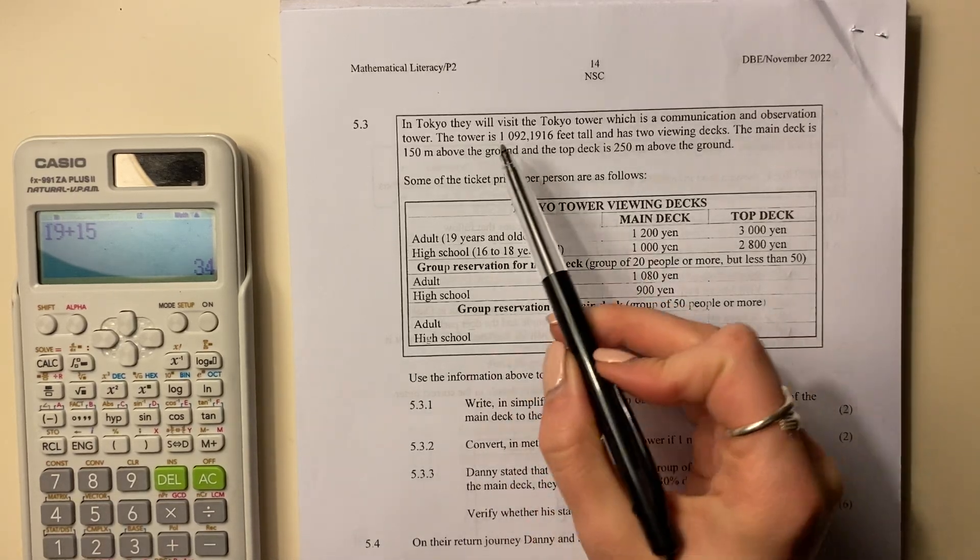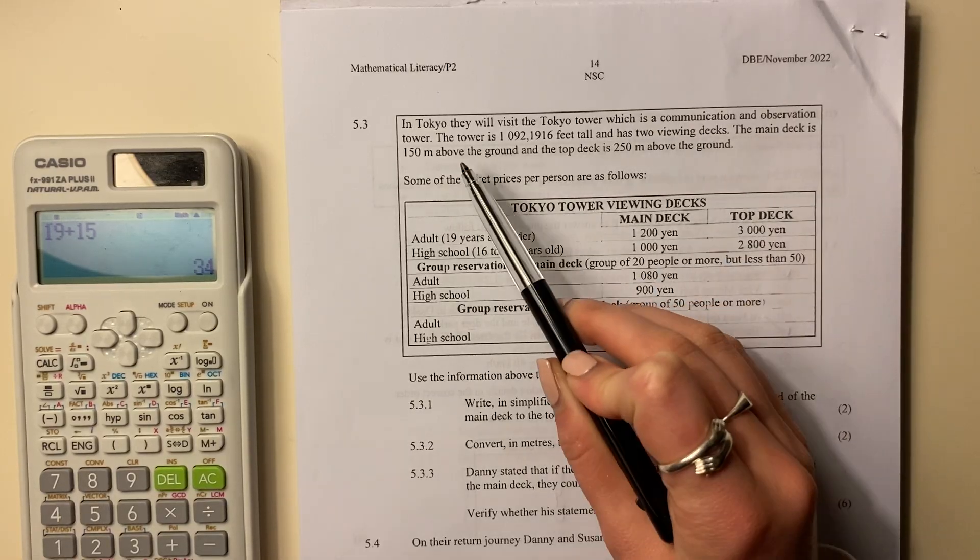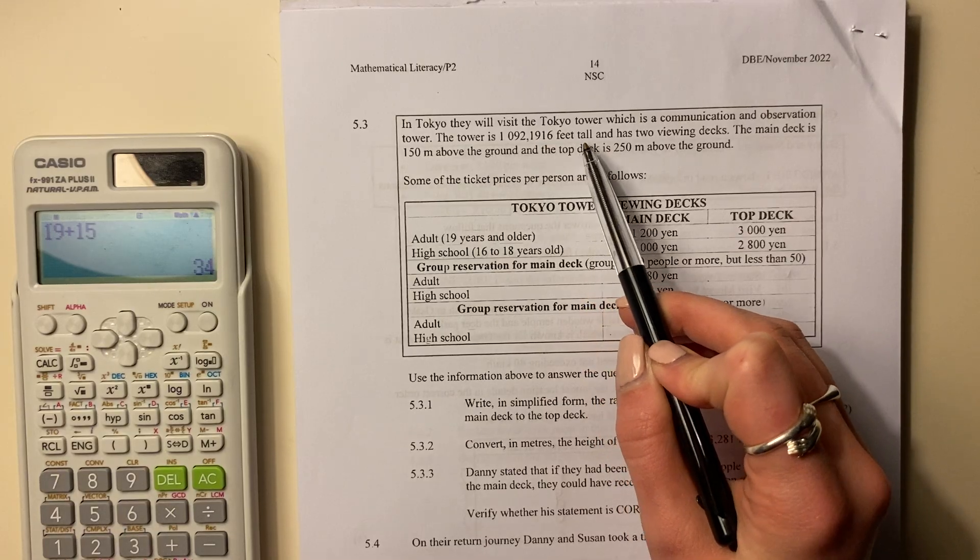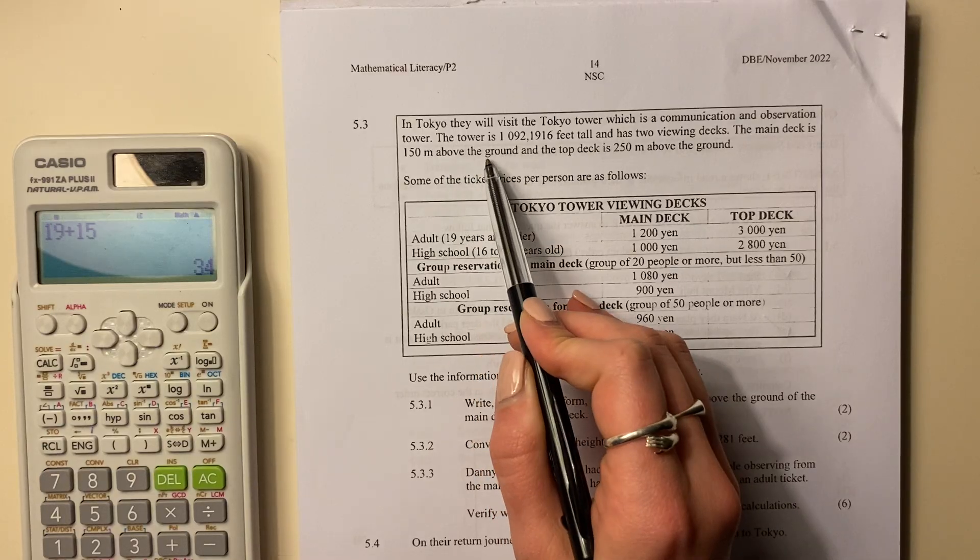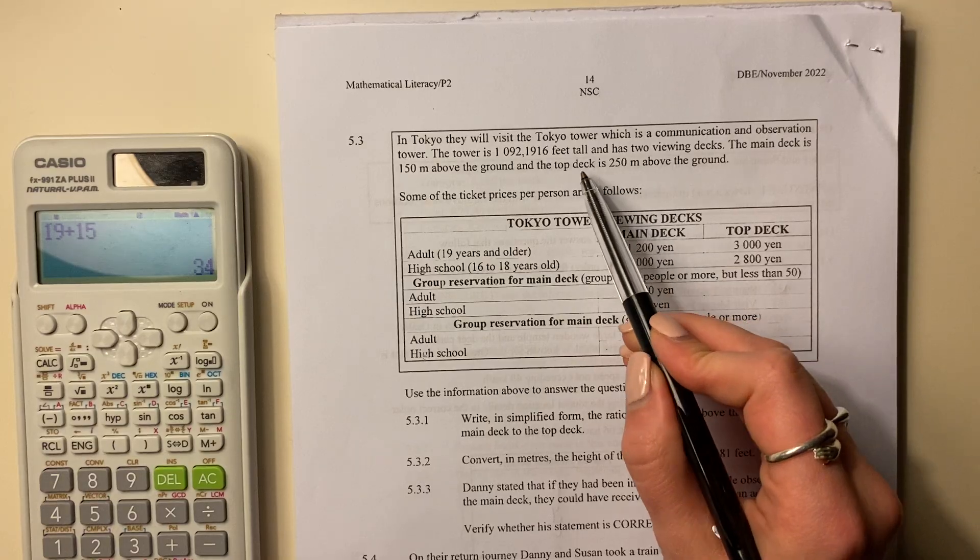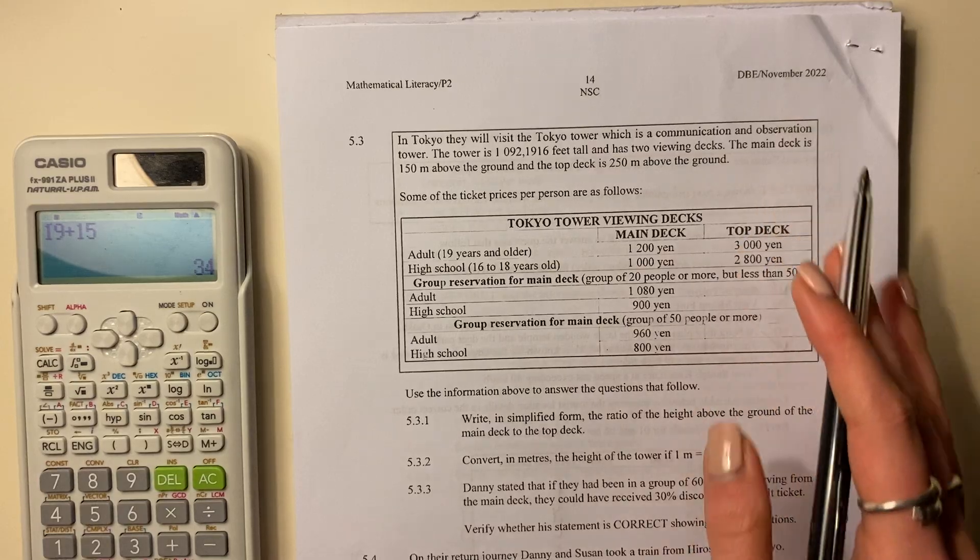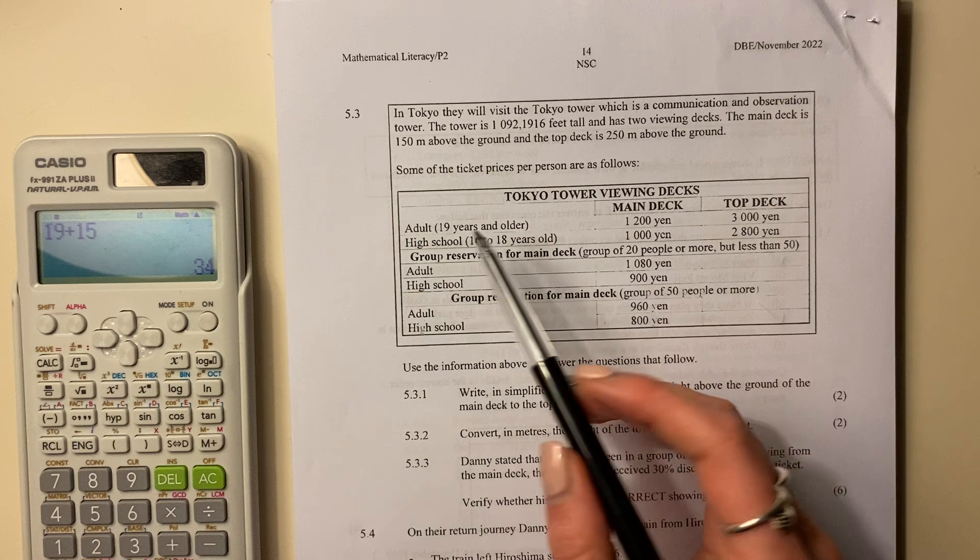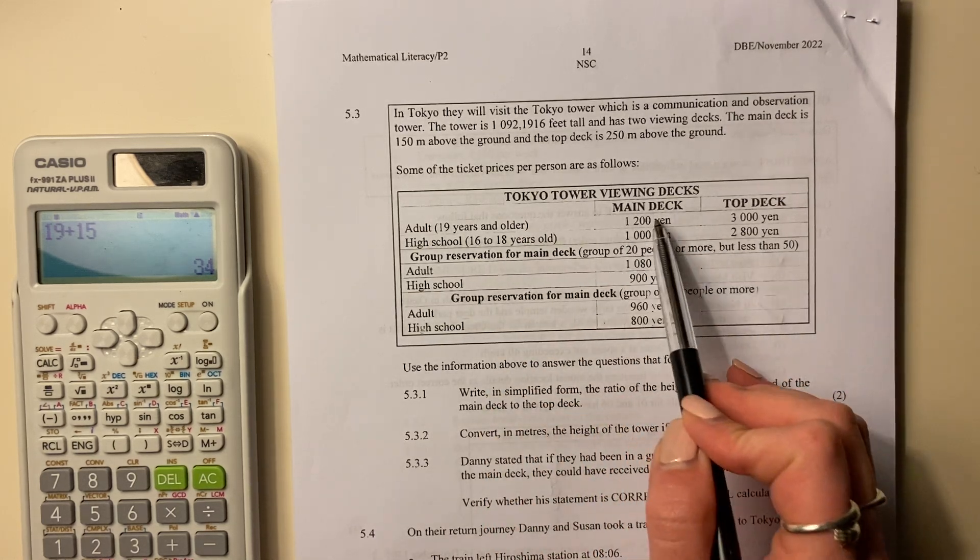5.3. In Tokyo, they will visit the Tokyo Tower, which is a communication and observation tower. The tower is 1092.1916 feet tall and has two viewing decks. The main deck is 150 meters above the ground and the top deck is 250 meters above the ground. Some of the ticket prices per person are as follows. They have adult and high school, this is the main deck and the top deck and that's the cost.